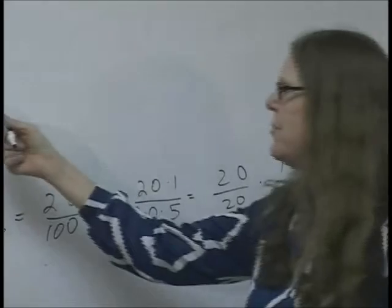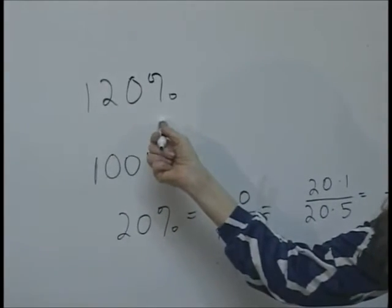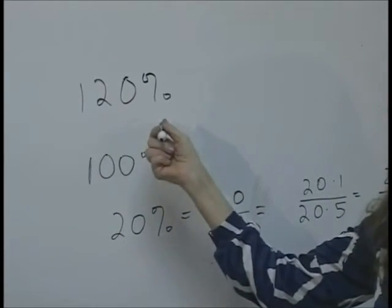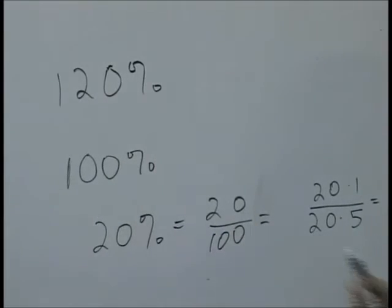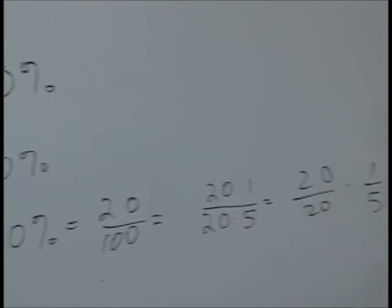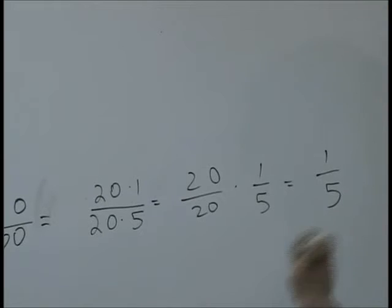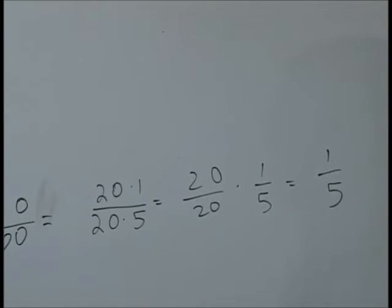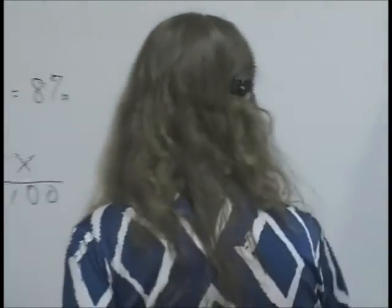So if something is 120 percent the cost of what it was last year, you've added a fifth of the cost on to last year's cost to get this year's cost. All right, let's do some problems with percents.